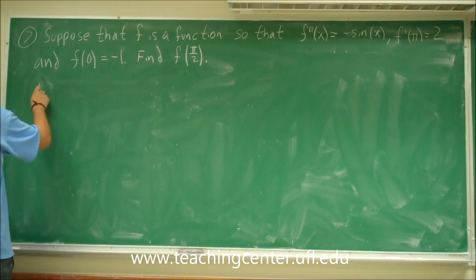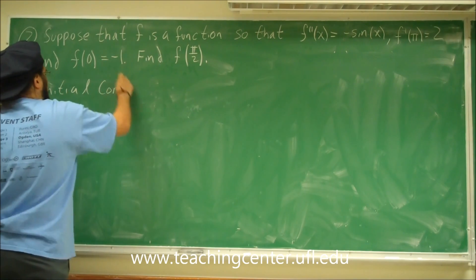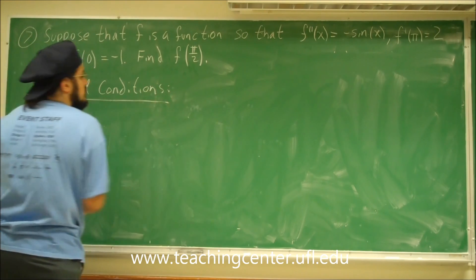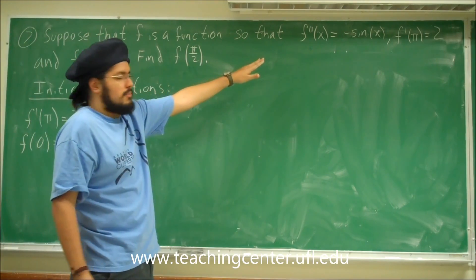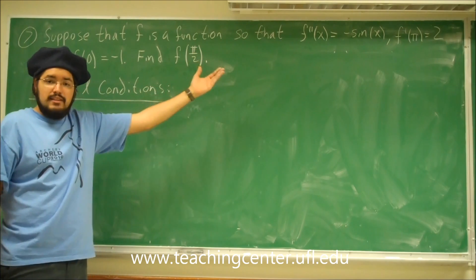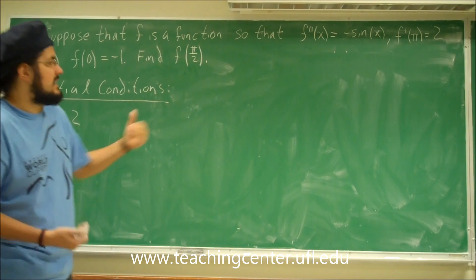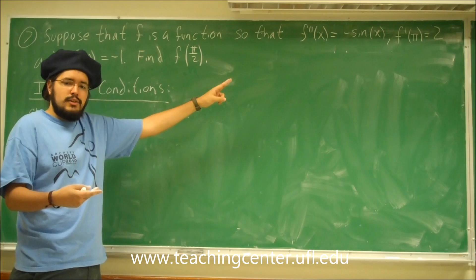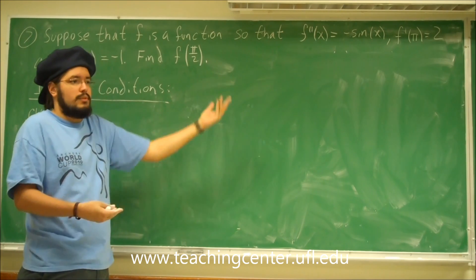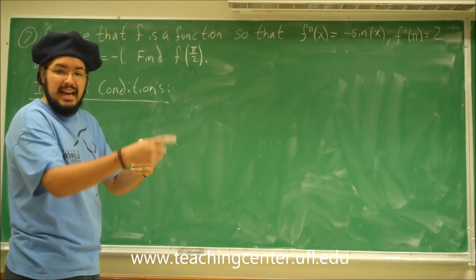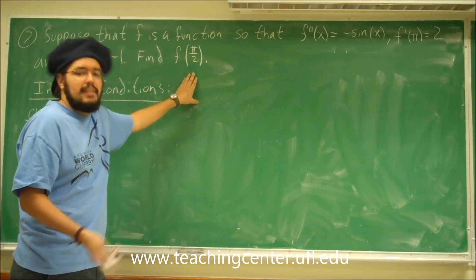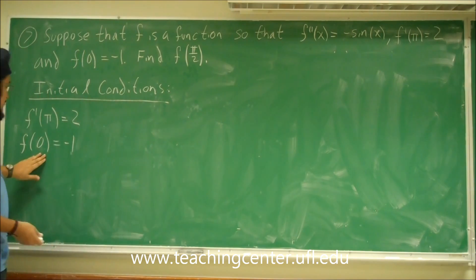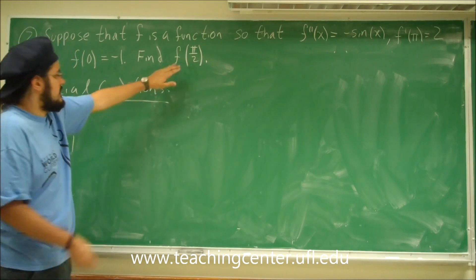So let's go ahead and state our initial conditions. The initial conditions are f prime of pi is equal to 2, and f of 0 is equal to negative 1. They give us this f double prime, and they want us to find f of pi over 2. But in order to get the original function f of x, we need to take the antiderivative of f double prime two times. Every time we do the antiderivative, we're going to have a plus c, or a plus d. The first time I do the antiderivative, I get f prime, but I have to add a constant. With that initial condition, I can find that constant. Then if I want f of x, I take the antiderivative again and I'll have another constant d. I'll use the other initial condition to find d, and then I'll have my original function f of x.